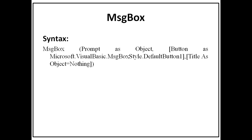The syntax of message box is as shown on the screen. We are required to write MsgBox and in round brackets there will be three parameters. The first parameter is the prompt, i.e. the message we want to display for the user. The second parameter is optional, specifying what type of button should be added into the message box. The third parameter is the title given to the message box.